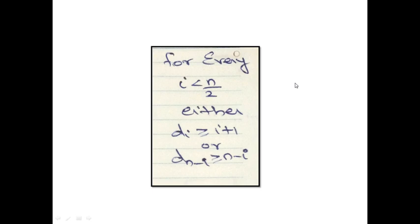Remember this: for every i less than n/2, if either of the two conditions is satisfied, you can say the graph is Hamiltonian. Thank you.